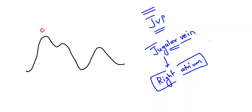Looking at the waveform, this wave is the A wave, this wave is the C wave, and this wave is the V wave. The descents are X and Y waves. Each has a special name.